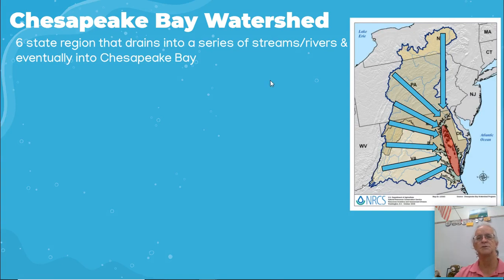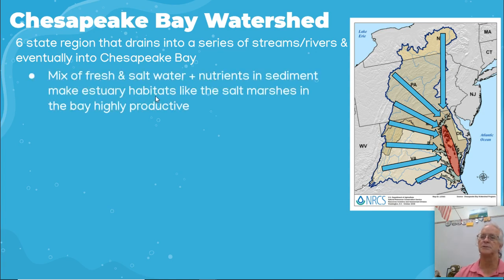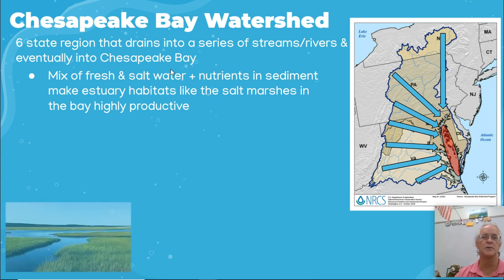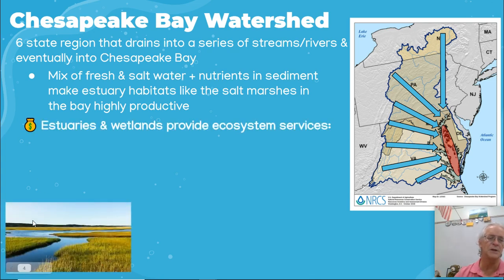So the Chesapeake Bay watershed: here we have six states that drain into this one area called the Chesapeake Bay via a series of different rivers and streams. It is a mixture of fresh water from the land with salt water from the Atlantic Ocean and nutrients from the sediments. This makes the estuary a salt marsh, and it's one of the most productive areas for photosynthesis on the planet. You can see all the different vegetation here, how packed in it is.